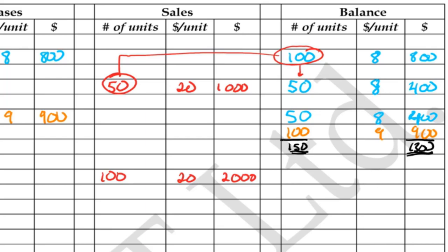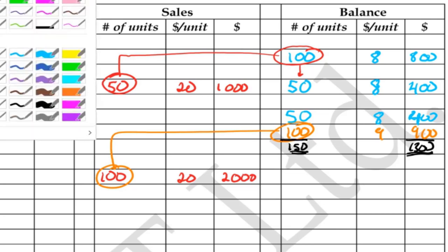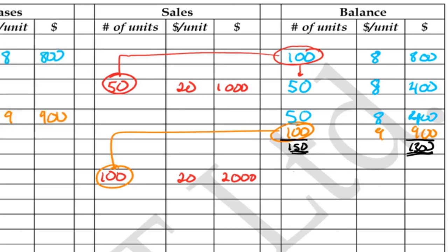We have enough from the orange batch to fully satisfy the order of 100, which means we're going to be left with 50 units in the blue batch only — valued at $400. When there's only one batch of stock, there's no need to separate the total.